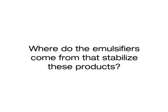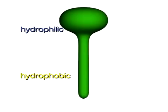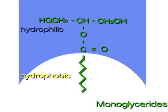In the case of salad dressings, as well as many other food products, emulsifiers are added to stabilize the water and oil interaction. There are a number of emulsifiers that can be added to create stable food products. All of the emulsifier molecules have one common feature. They are composed of two parts, a hydrophilic part and a hydrophobic part, such as the monoglyceride emulsifier molecule shown here. The hydrophilic portion of the monoglyceride molecule interacts with the water phase, while the hydrophobic portion interacts with the oil phase.